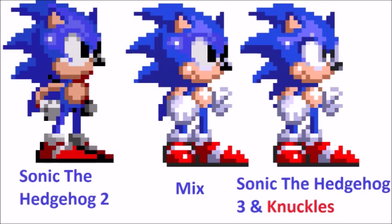So the Sonic the Hedgehog 2 sprites are on the left and the Sonic 3 and Knuckles sprite is on the right. I say Sonic 3 and Knuckles because, you know, Sonic 3, Sonic 3 and Knuckles — whatever. I decided to mix them in the middle for fun. Now the differences I see here are the eye, the mouth, the gloves — basically everything has changed. They basically just redesigned Sonic for Sonic 3 and Knuckles.